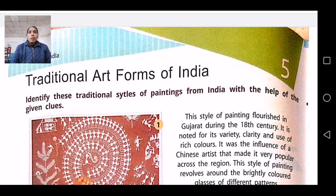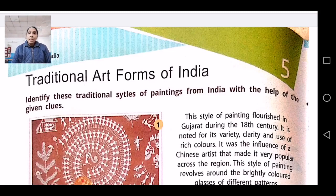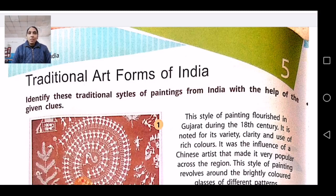Traditional means something which began many years ago — not a new one. Something that has been continuing for over 100 or 200 years becomes a tradition of that respective place. Different paintings, art, and architecture of different states have been followed from many years ago, forming the tradition of that particular place. Today we continue with this note and start with traditional art forms of India, talking about painting, drawing, and this kind of art form.